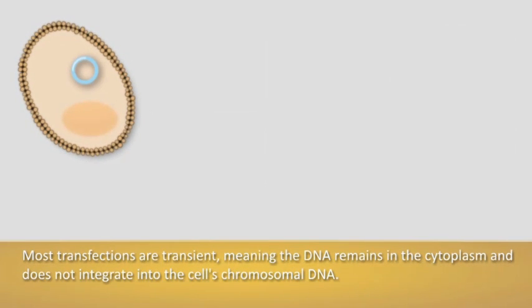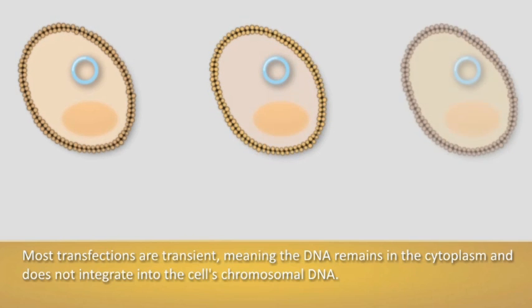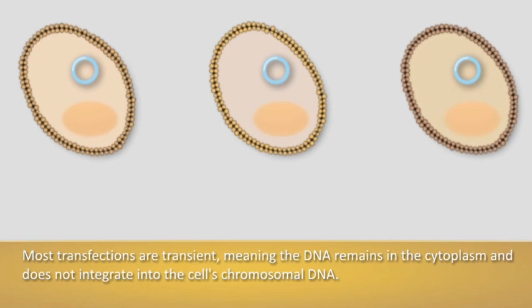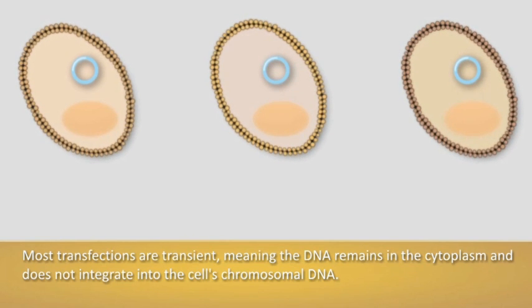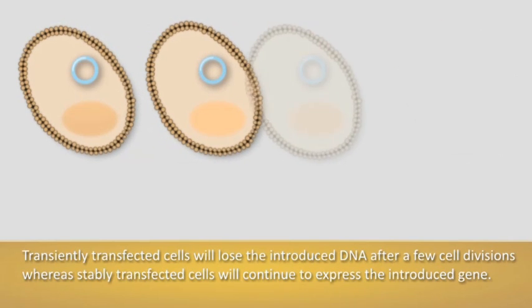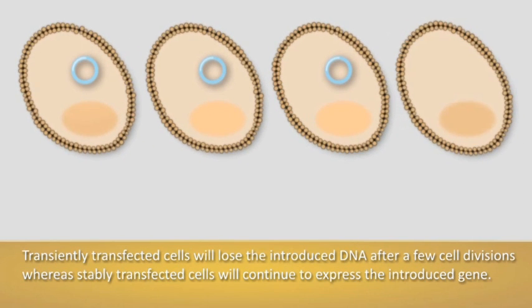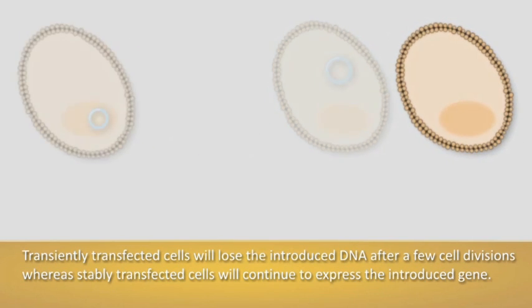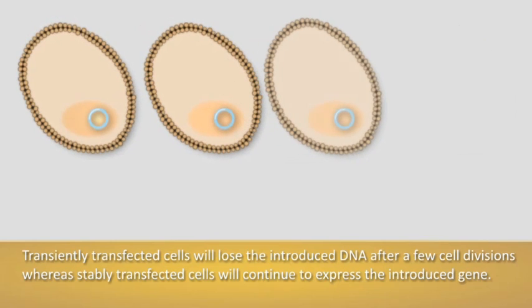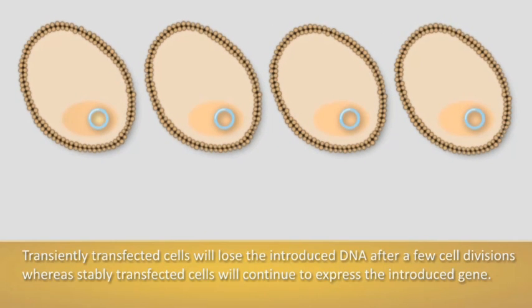Most transfections are transient, meaning that the DNA remains in the cell cytoplasm and does not integrate into the cell's chromosomal DNA. Transiently transfected cells will lose the introduced DNA after a few cell divisions, whereas stably transfected cells will continue to express the introduced gene.